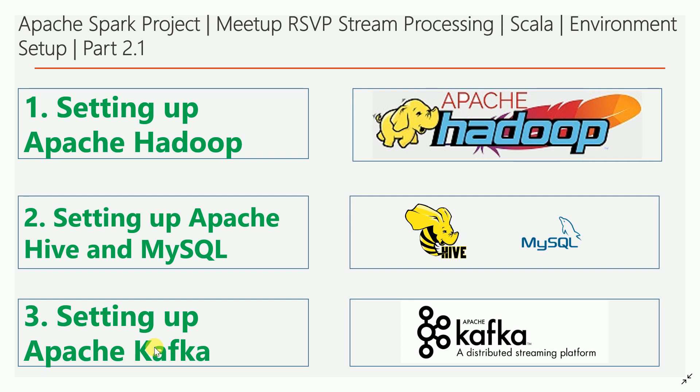The third thing is setting up Apache Kafka, because we are going to write a Kafka producer which will take data from the meetup.com RSVP stream and publish it to a Kafka topic. Please watch my other video where I set up Apache Kafka — I will add those details in the description of this video.